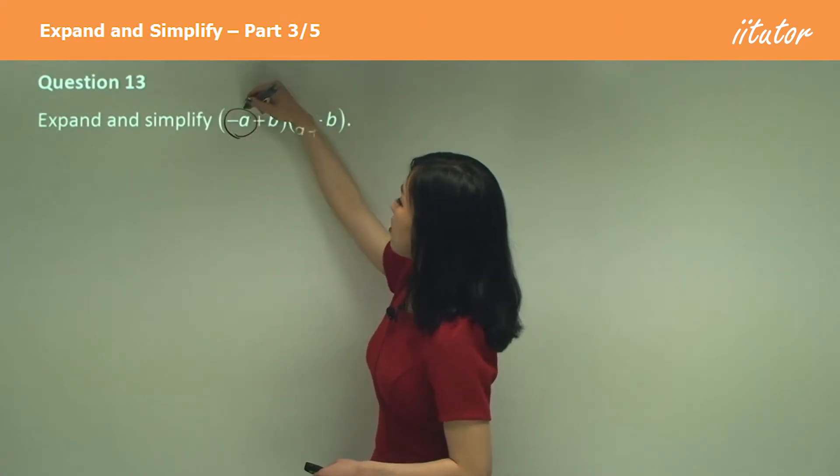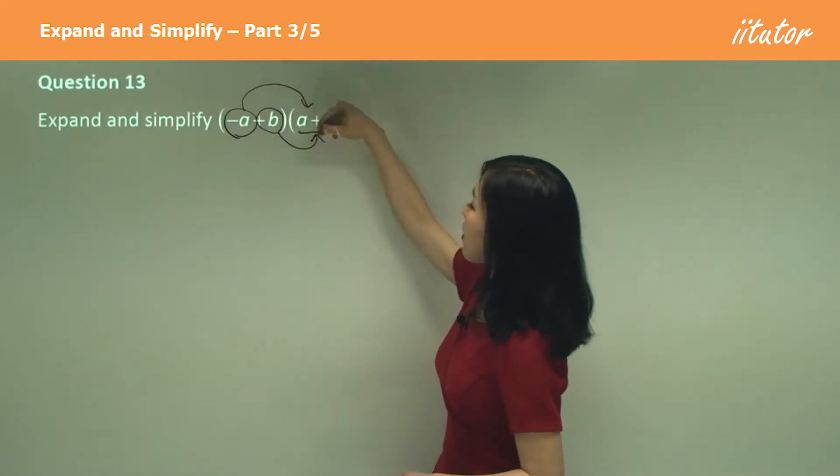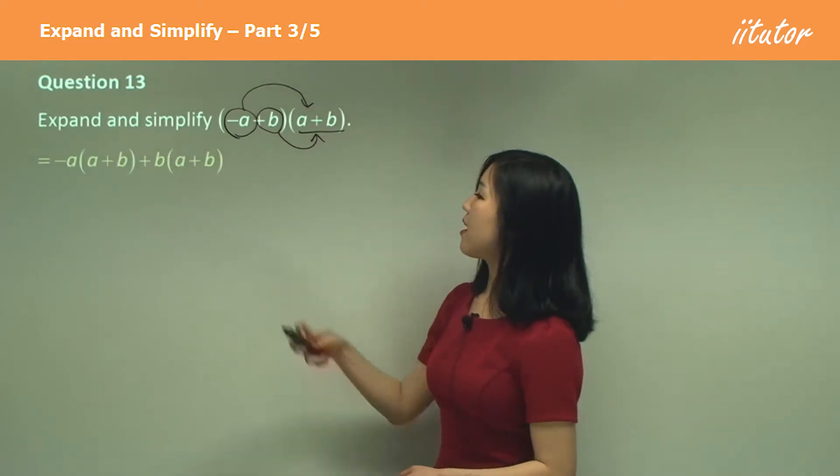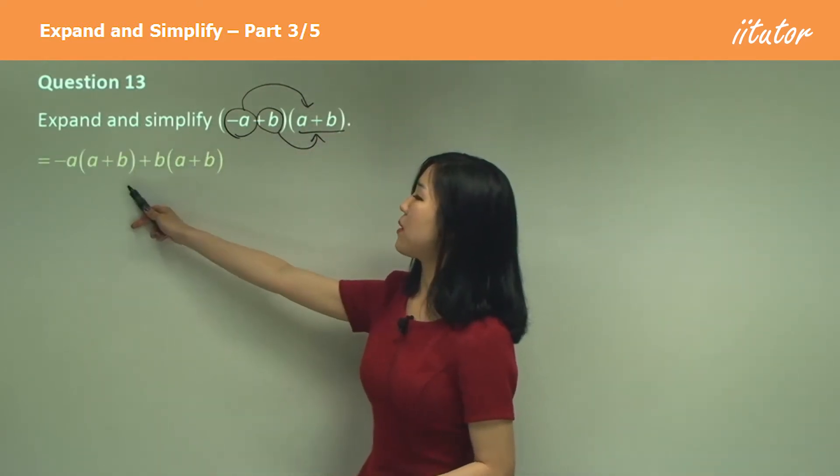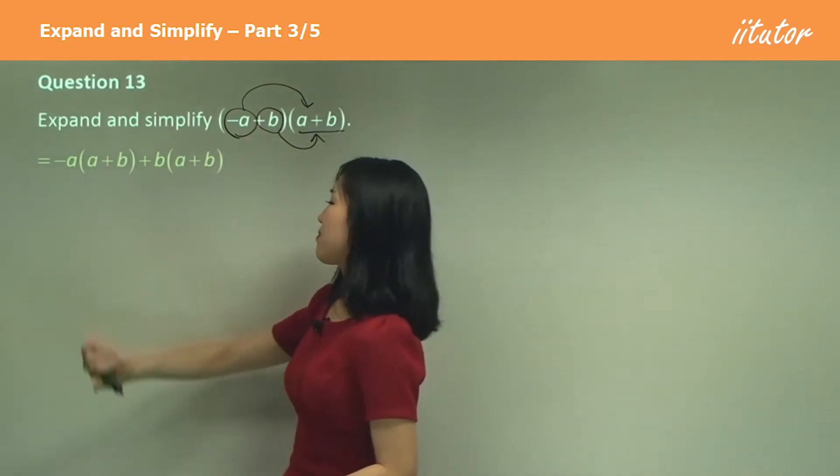What I would do is I'll do that times the big bracket and that times the big bracket. So if I separate it, I'll get negative a times a plus b plus b times a plus b. And just expand it.